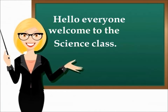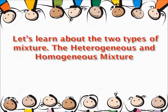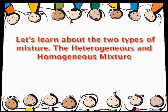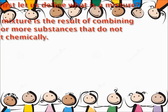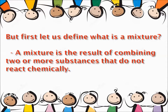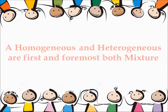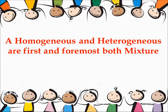Hello everyone, welcome to the science class. Let's learn about the two types of mixture: the heterogeneous and homogeneous mixture. But first, let us define what is a mixture. A mixture is the result of combining two or more substances that do not react chemically.